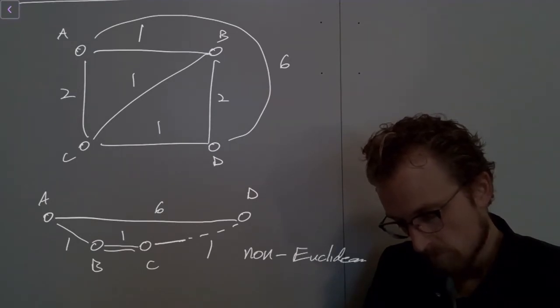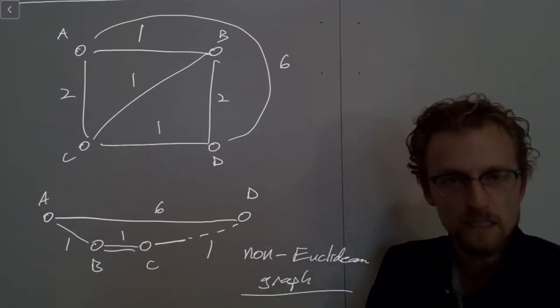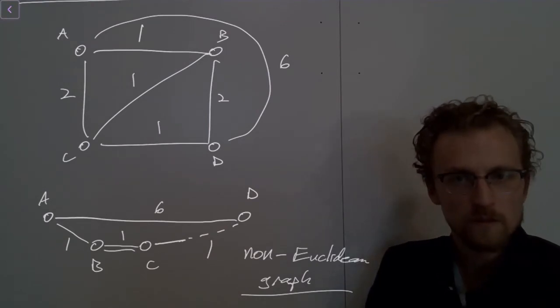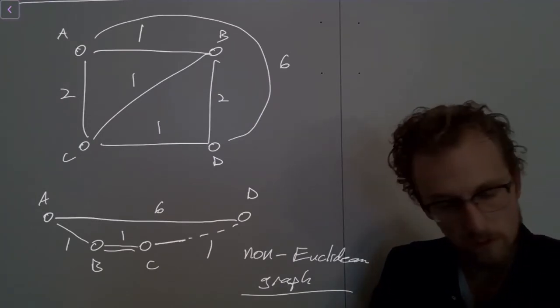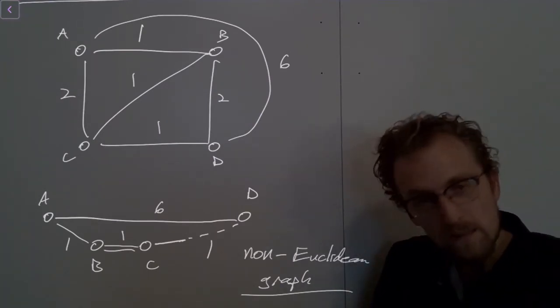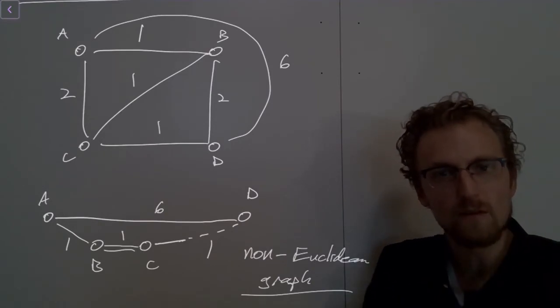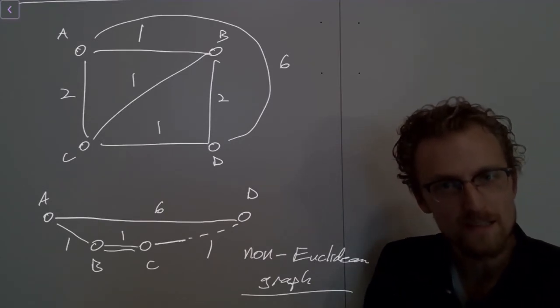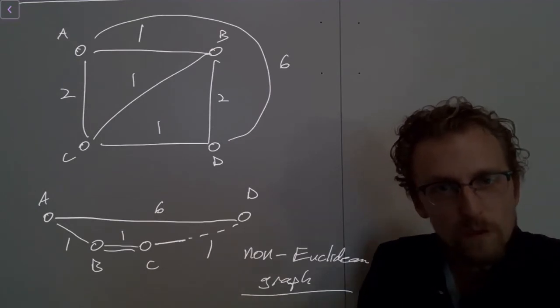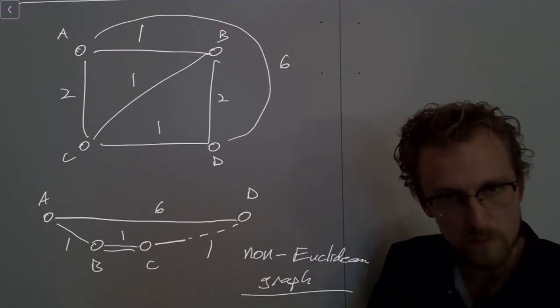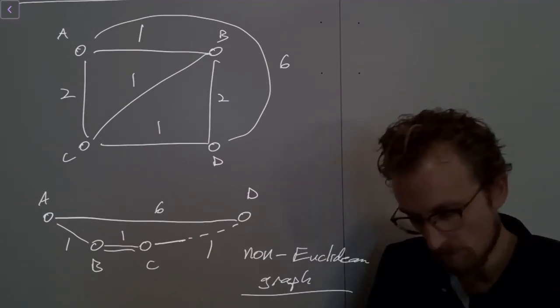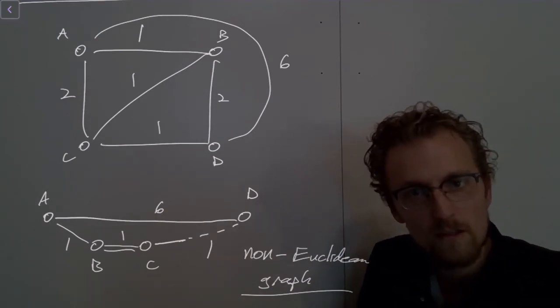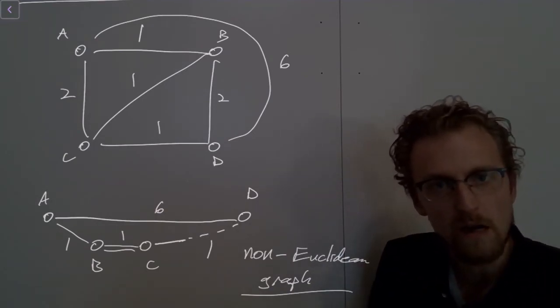And what makes it non-Euclidean? Just the fact that these weights can't correspond to Euclidean distances. They can't correspond to distances in a Euclidean geometry. So it turns out that that's a fundamental problem. That's a fundamental reason why the TSP is not approximable. And if we constrain ourselves to having edge weights that correspond to physical distances, then TSP suddenly magically becomes approximable. We can use that fact to argue that certain algorithms are approximation algorithms for TSP.